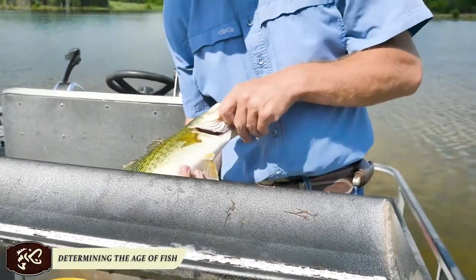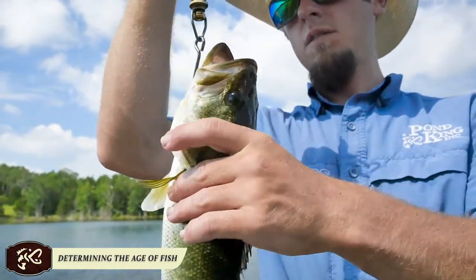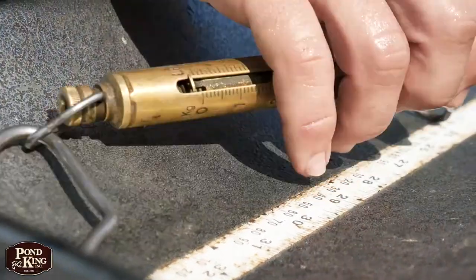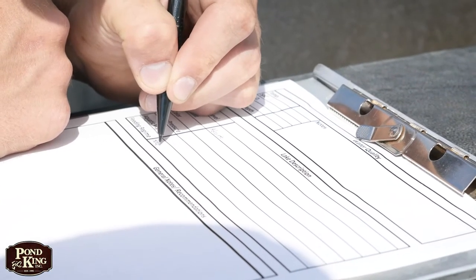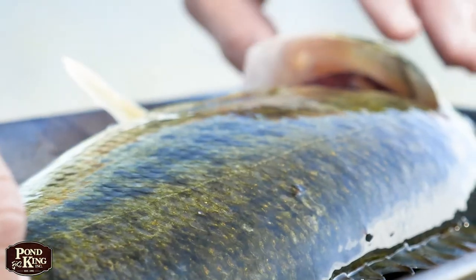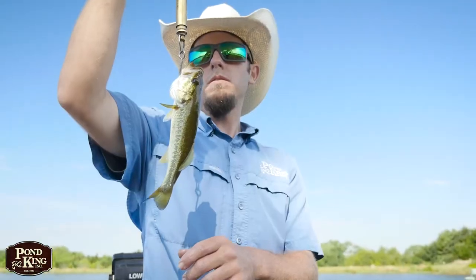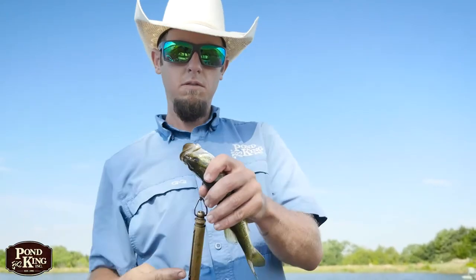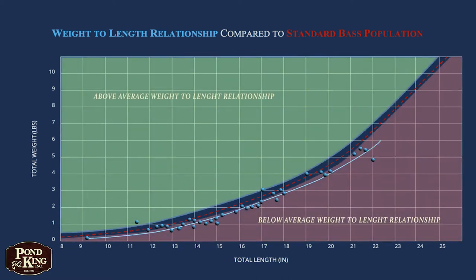The reason we include age is that it is possible for a fish to be well within a desired relative weight percentage, but be much older than it should be for that size. If we didn't include age in the assessment, we might mistakenly conclude that a population was healthy based on its respective relative weight, when in fact the fish might be underweight for its age. The pond management plan for a pond with fish in the 90th to 100th percentile would be very different from a population that is in the 60th to 80th percentile.